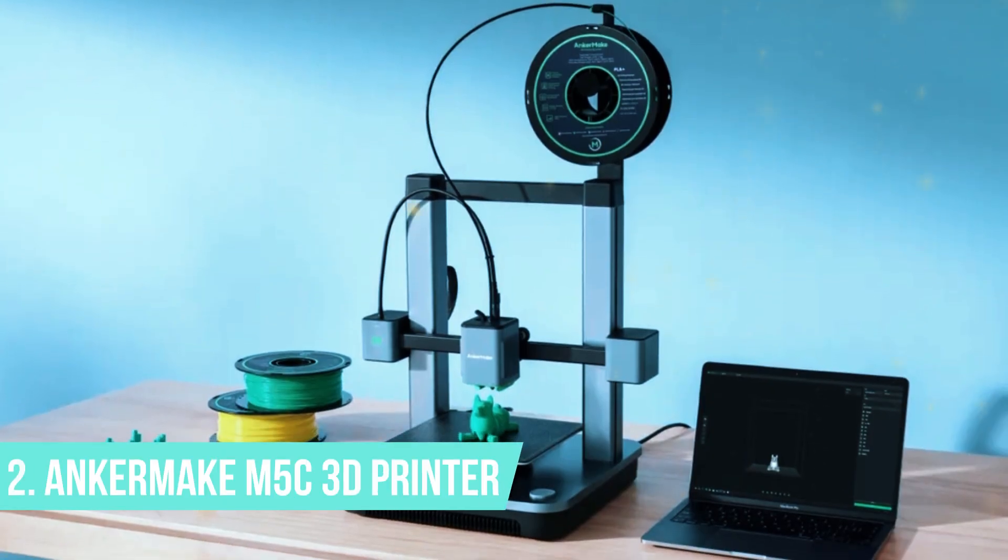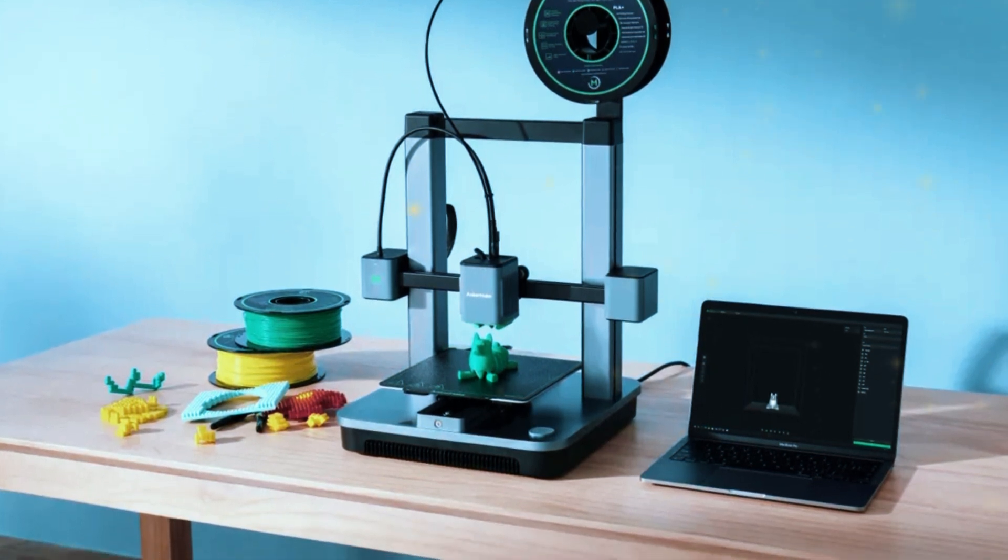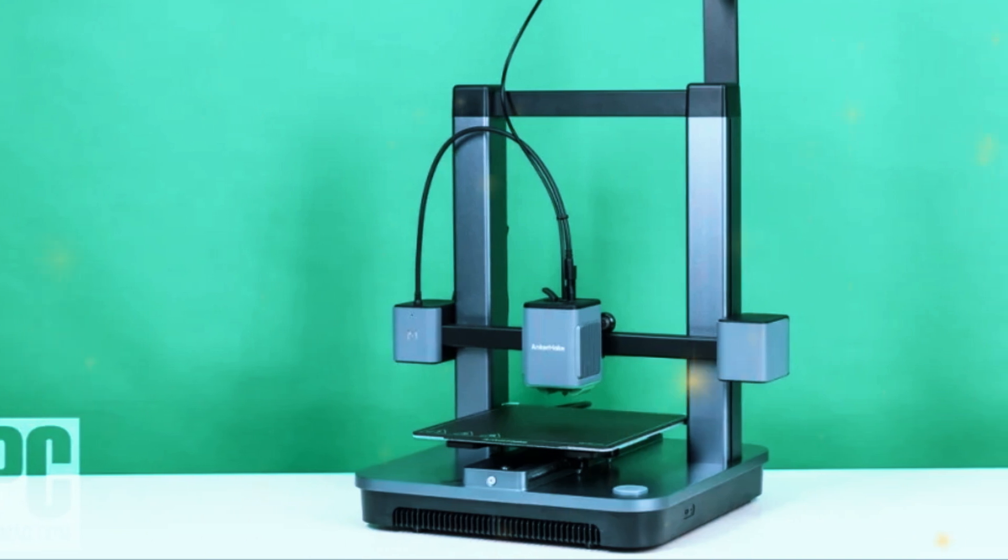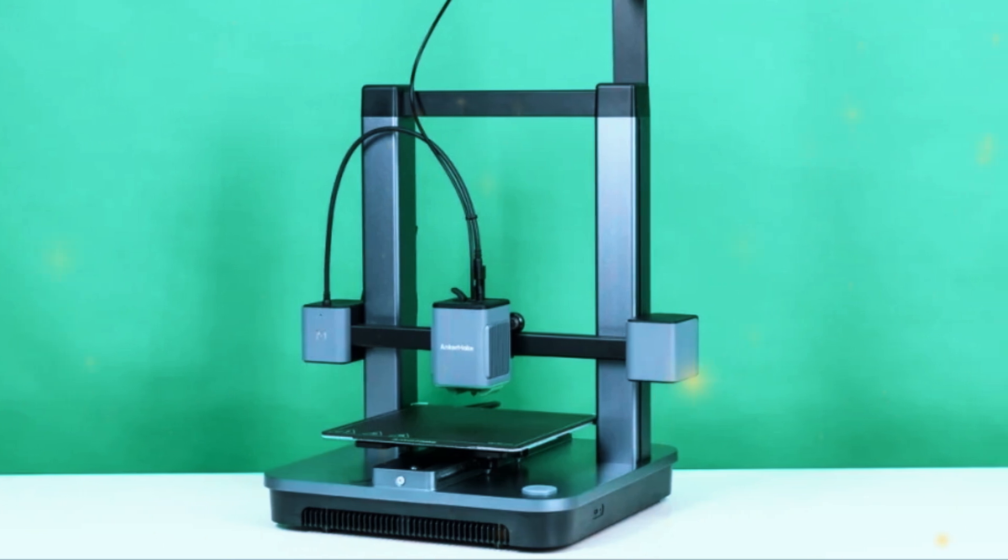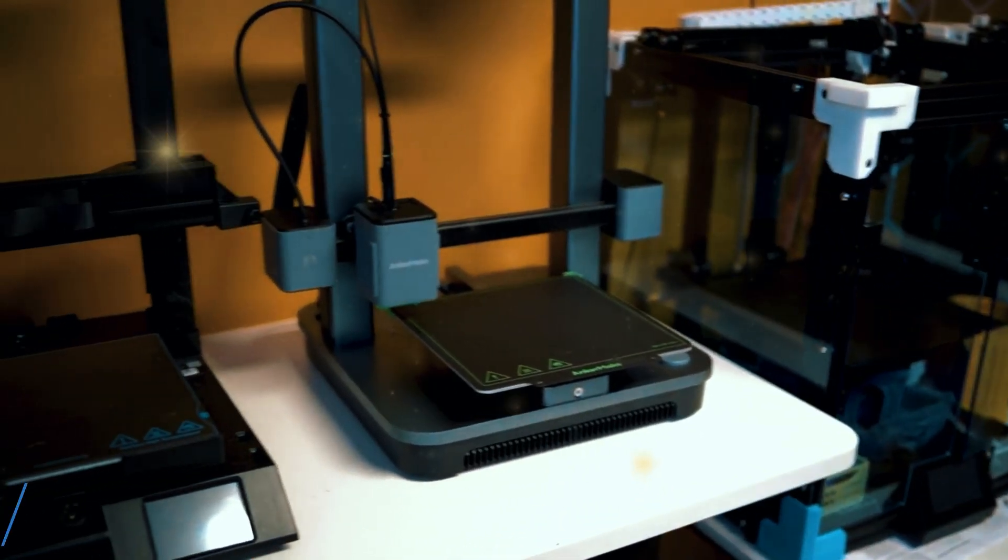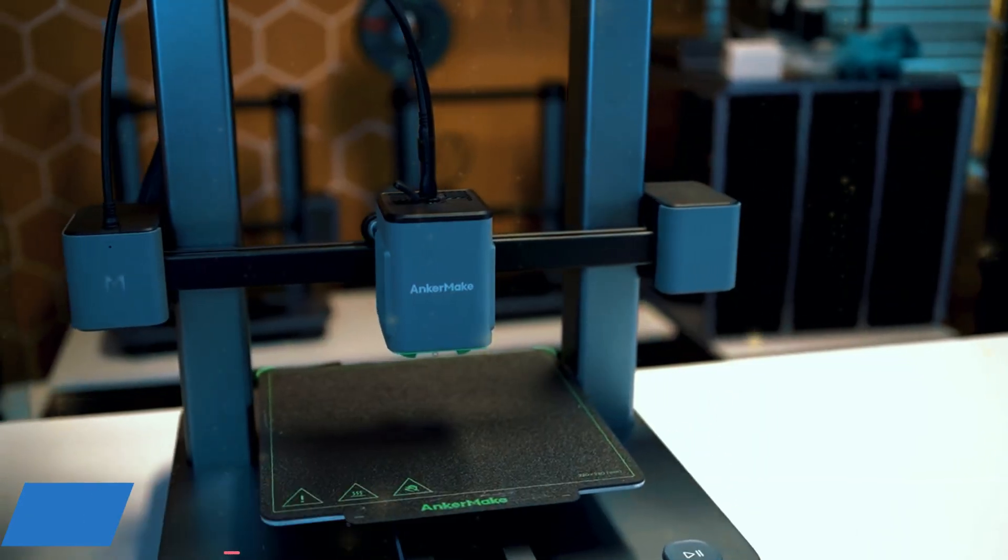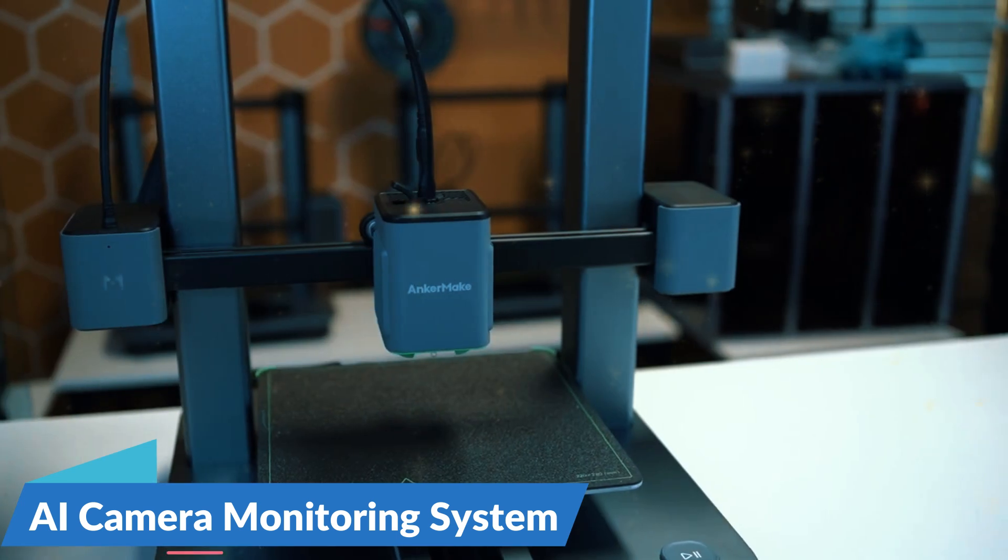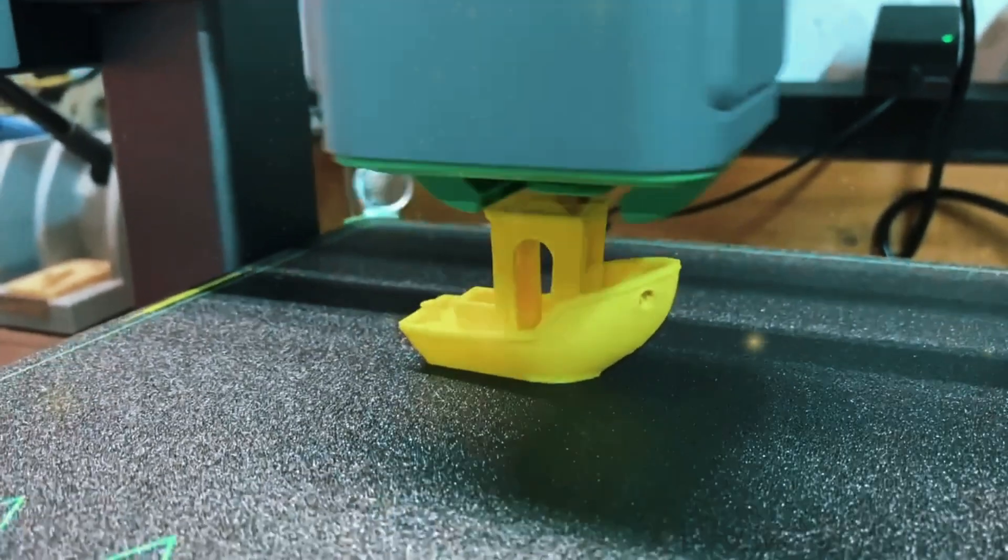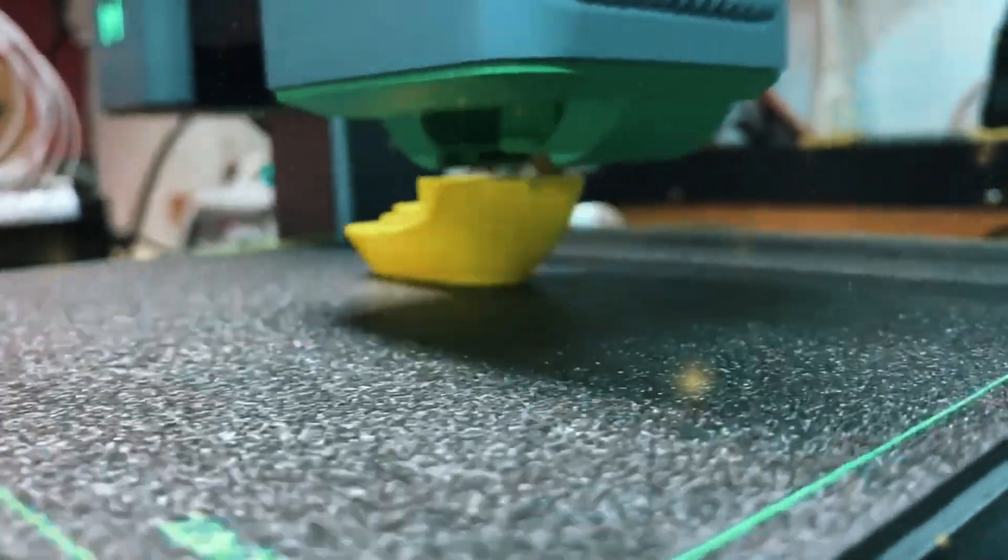Number 2, Anchormake M5 C3D Printer. Coming in at number 2 is the Anchormake M5 C3D Printer, a machine that combines cutting-edge technology with user-friendly features, making it a top choice for both beginners and experienced makers. The Anchormake M5 C offers a 7.5x7.5x7.5-inch build volume, which is spacious enough for a wide range of projects, from intricate models to larger, more complex parts. One of its most impressive features is the AI camera monitoring system, which keeps an eye on your prints in real-time, detecting any issues like layer shifts or extruder jams, and pausing the print if necessary to prevent waste.